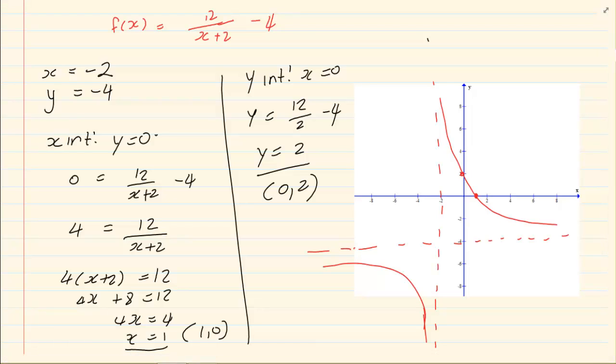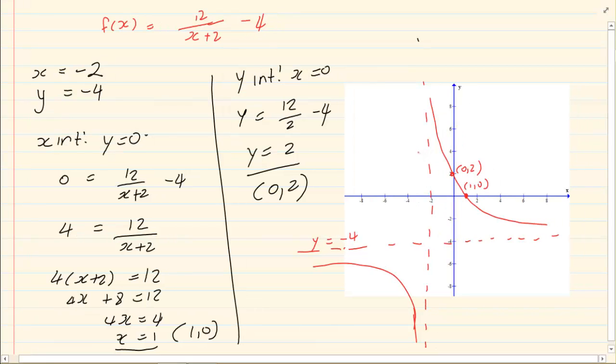Otherwise you will lose marks. Now here you have to put 1 and 0. And here you should put 0 and 2. If they ask you to clearly indicate the equations of the asymptote. Then you are going to say Y is equal to minus 4. And here X is equal to minus 2.